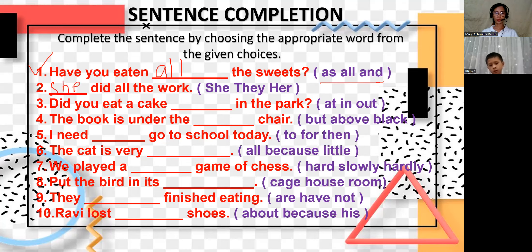Let's go to three. Did you eat a cake? I think this is supposed to be not there, so the answer should be yes in. Okay, next. The book is under the black chair. Black chair. That black chair, which is correct. Now let's go to sentence number five. I need to go to school today. Yes, I need to go to school today.